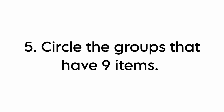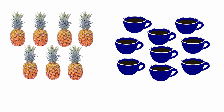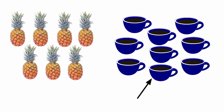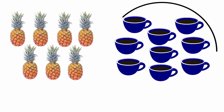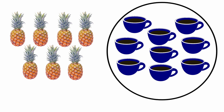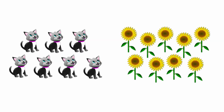Then look at the fifth one. Circle the groups that have 9 items. Look at the first one. There are 1, 2, 3, 4, 5, 6, 7. There are 9 cups. So we are going to circle the picture of cups. Then look at the next one. There are 9 cups, so we are going to circle the picture.